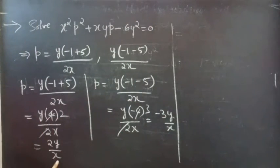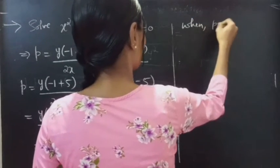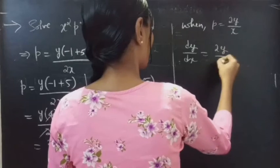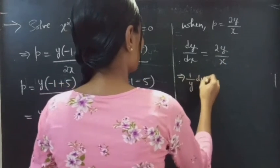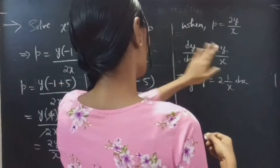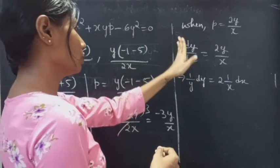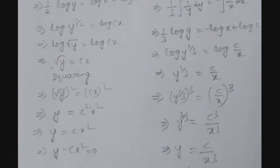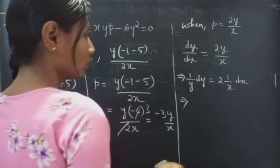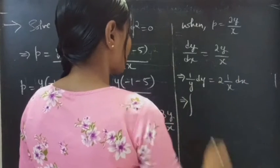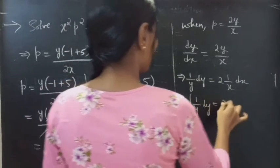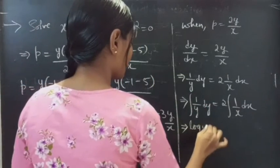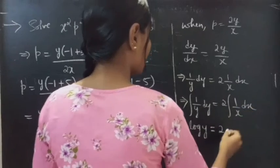Case 1: when p equals 2y over x. Putting p equals dy/dx, we get dy/dx equals 2y over x, which gives (1/y) dy equals 2 times (1/x) dx. The variables are separable. Integrating both sides: integral of 1/y dy gives log y equals 2 times integral of 1/x dx, which gives 2 log x.